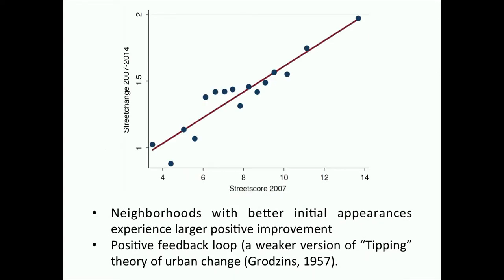We also tested the tipping theory of urban change, which claims that neighborhoods already doing well accelerate growth at almost an exponential scale, while those not doing well spiral into decline. We did not find strong support for that: neighborhoods already doing well kept doing well and experienced the largest improvement, but neighborhoods not doing well did not decline — they simply improved less. We found almost a linear trend between initial appearance and positive change in appearance.